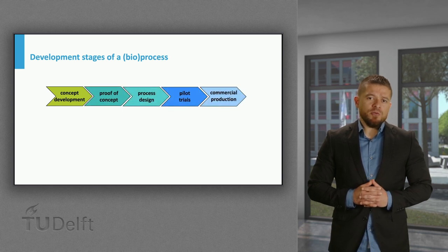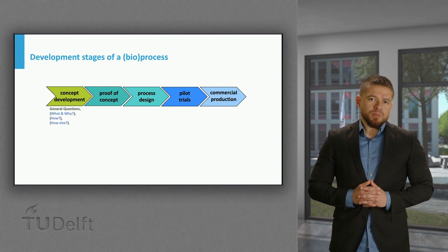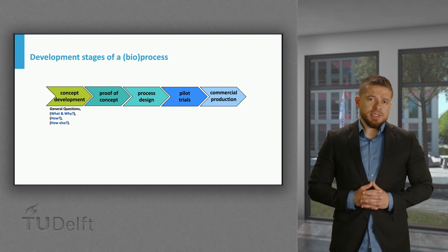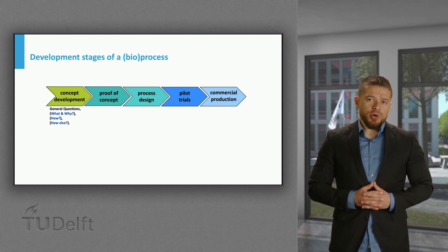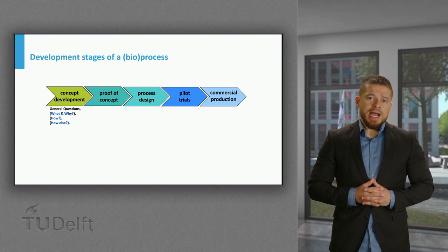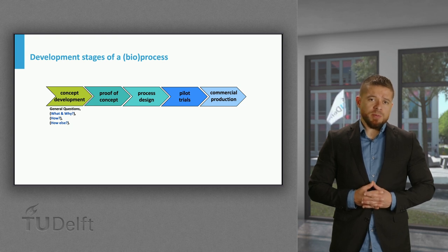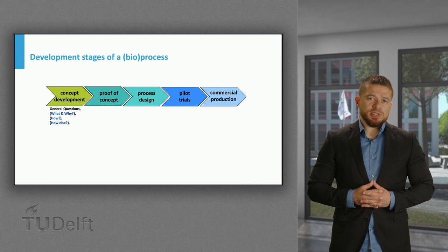The successful development of a bioprocess takes place along five different stages. The first is concept development, where the scope of the project is defined and general questions are asked — for example, what is the target product and why, what is the scale of the process, and knowing your potential market. We should also ask how this product could be produced and what are the current and promising technologies, so knowing the technological context is quite important.